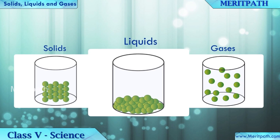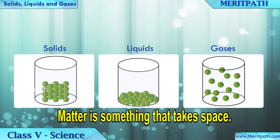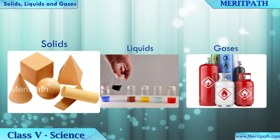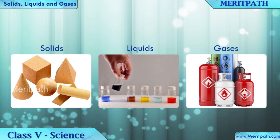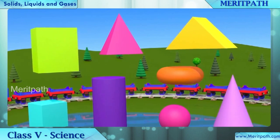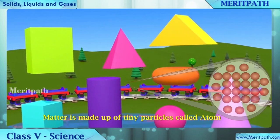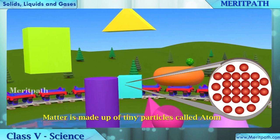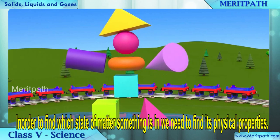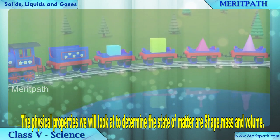Solids, liquids, and gases. Matter is something that takes up space. The three states of matter are solid, liquid, and gas. Everything around you is made up of matter, just in different shapes. Matter is made up of tiny particles called atoms. In order to find the state of matter something is in, we need to find its physical properties.